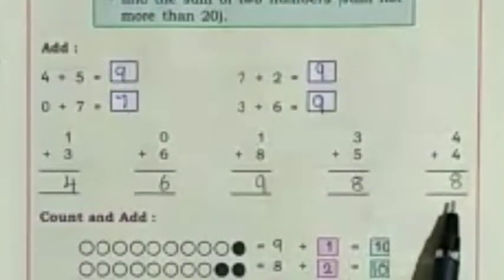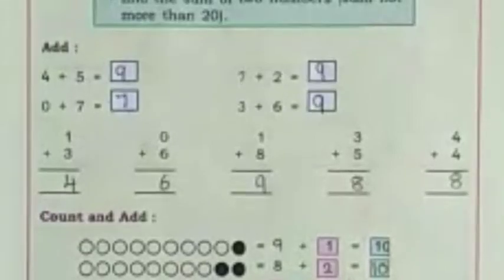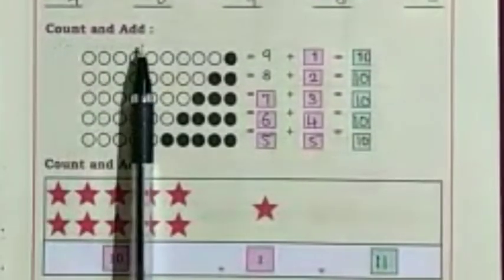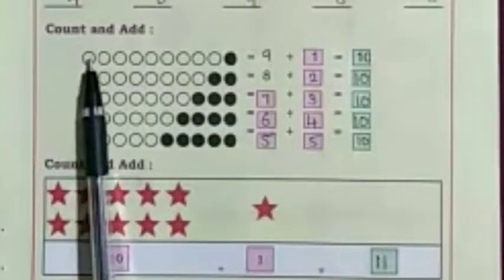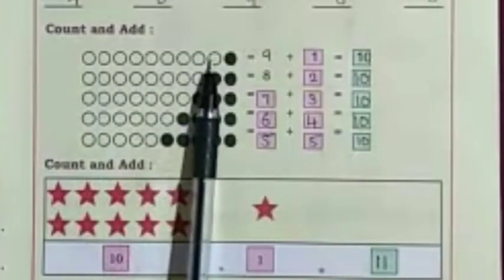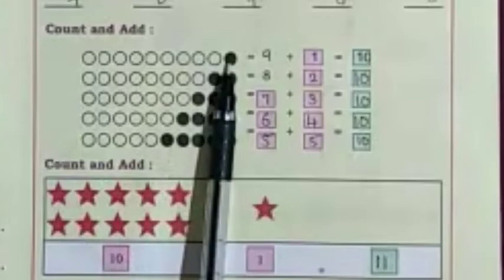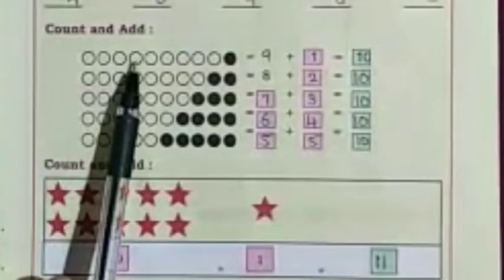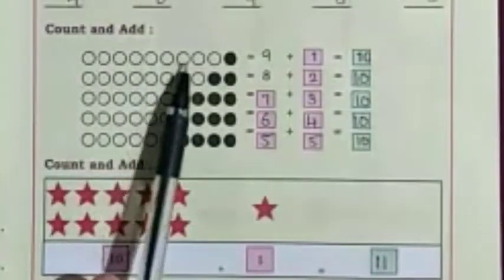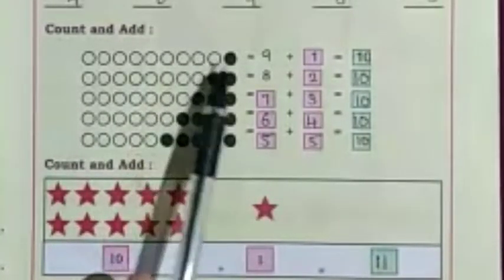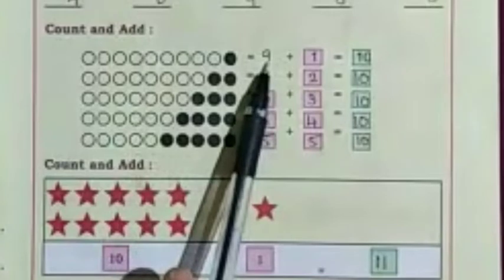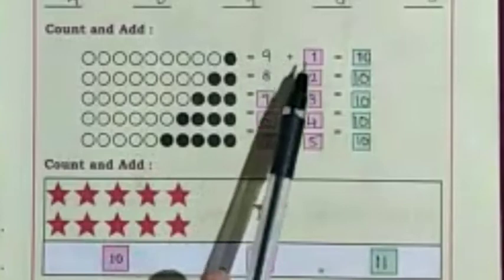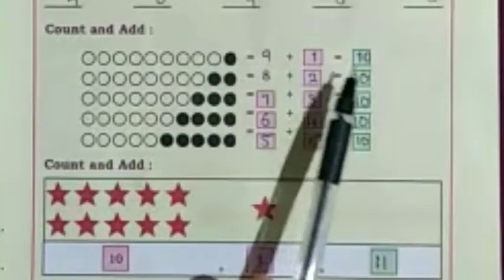This exercise you do by yourself. Count and add. Now we will count these circles and add with the colored circles. 1, 2, 3, 4, 5, 6, 7, 8, 9. 9 plus 1 is equal to 10.